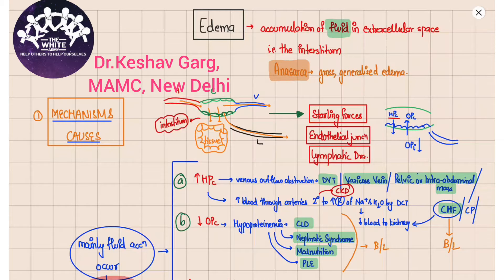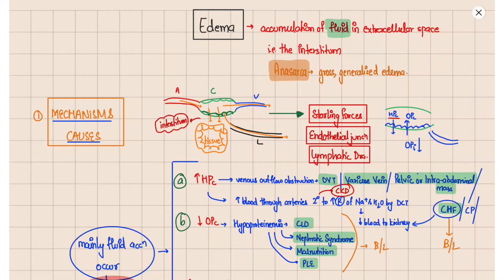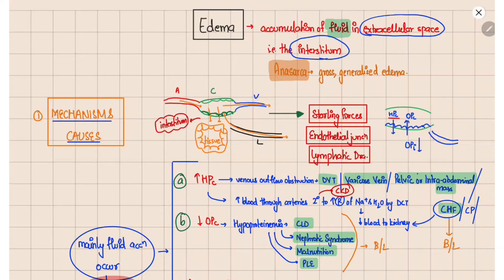We'll be discussing edema, which refers to the accumulation of fluid in the extracellular space, that is the interstitium. If there is generalized edema present all over the body and is visible grossly, then we use the term anasarca. Now, let's say this is an artery, this is a capillary following it.